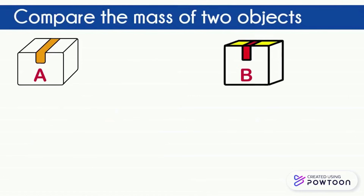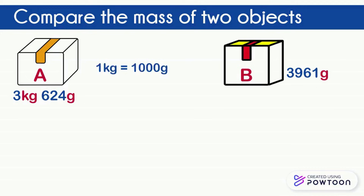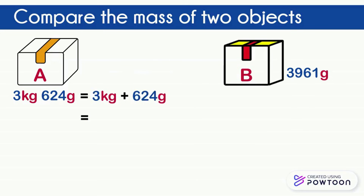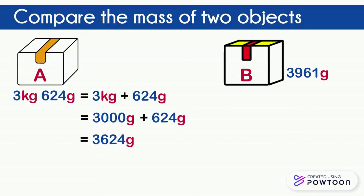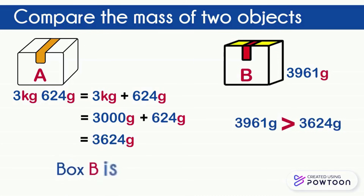Which one is the heaviest object? Box A weighs 3 kilograms and 624 grams. Box B weighs 3,961 grams. To compare two masses, they must be converted into the same unit — here, we convert to grams. Since 1 kilogram equals 1,000 grams, Box A weighs 3,000 grams plus 624 grams, which equals 3,624 grams. Now we can compare: 3,961 grams is greater than 3,624 grams, so Box B is heavier than Box A.